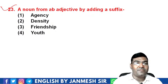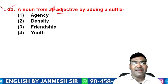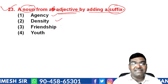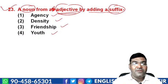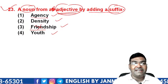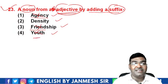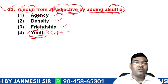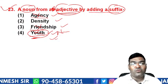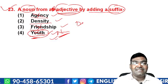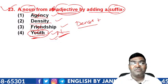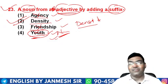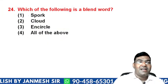Question 23: form a noun from an adjective by adding a suffix. Options are 'agency', 'density', 'friendship', or 'youth'. 'Friend' is not an adjective. 'Agent' is a noun. 'Young' is an adjective, but 'youth' is already a noun — nothing is added. However, 'dense' is an adjective, and adding the suffix '-ity' gives 'density', which is a noun. The answer is option B — 'density'.